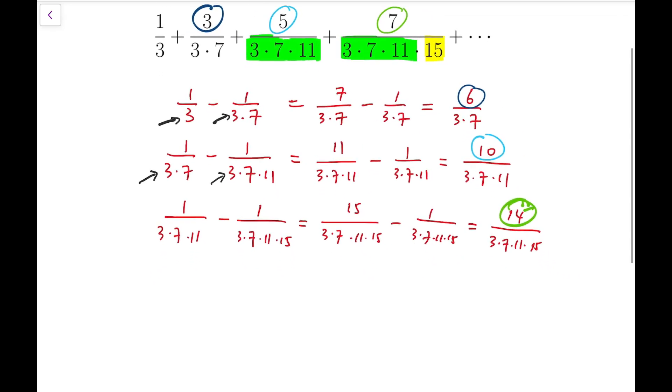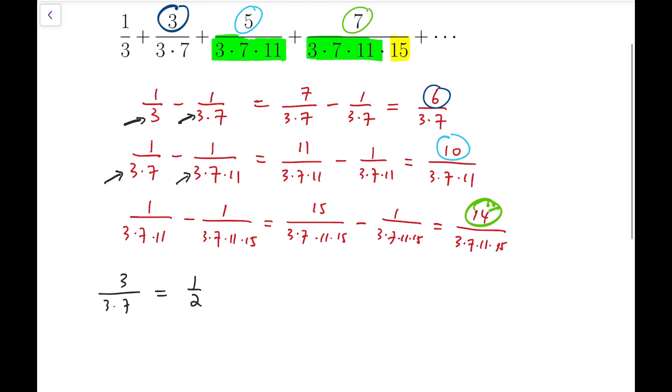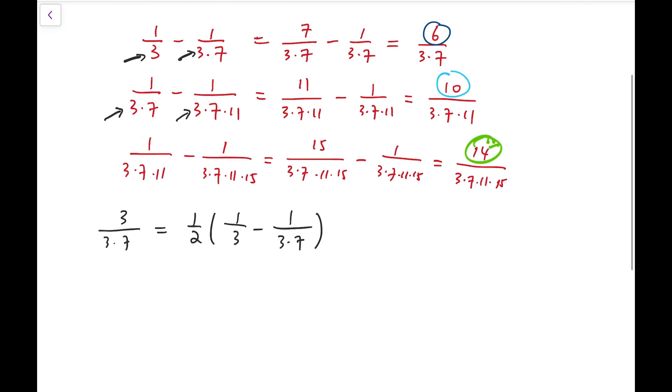Say, for example, 3 over 3 times 7 is equal to one half of the difference of one third and 1 over 3 times 7. And then, 5 over 3 times 7 times 11 is one half of 1 over 3 times 7 minus 1 over 3 times 7 times 11, and so on. And you may notice that this is actually some sort of telescoping sum.